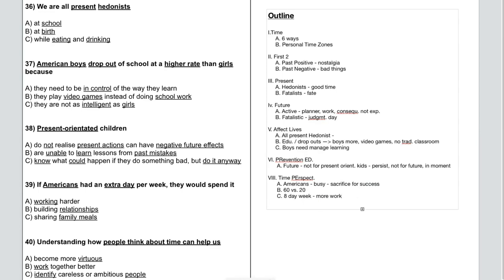It's really important to be aware of how other people think about time. We tend to think, that person's really irresponsible, or that guy's power-hungry. But often what we're looking at is not fundamental differences of personality, but really just different ways of thinking about time. Seeing these conflicts as differences in time perspective, rather than distinctions of character, can facilitate more effective cooperation between people, and get the most out of each person's individual strengths.